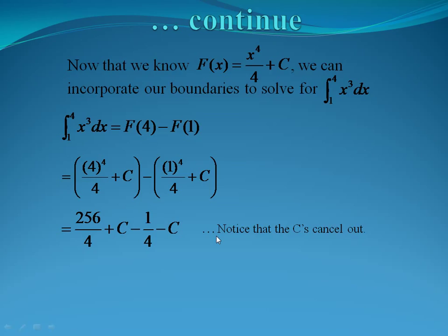This is not a coincidence. When we do the definite integral, the c always cancels out when we plug in the bounds, so we don't actually need to write the c when we have actual bounds on our integral. So now we can do 256 over four minus one over four, which is 255 over four, which is approximately 63.75.